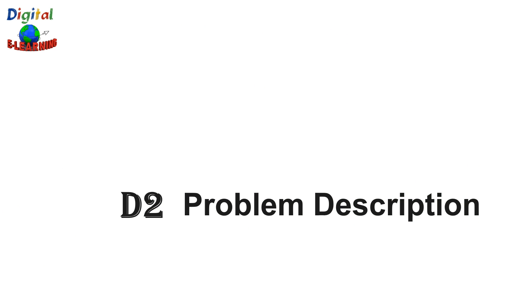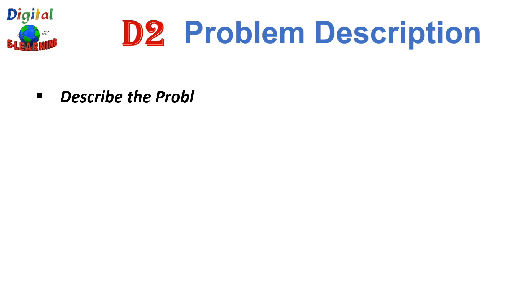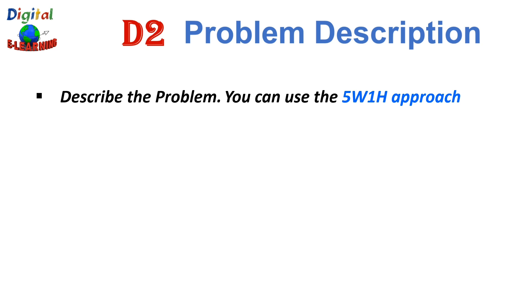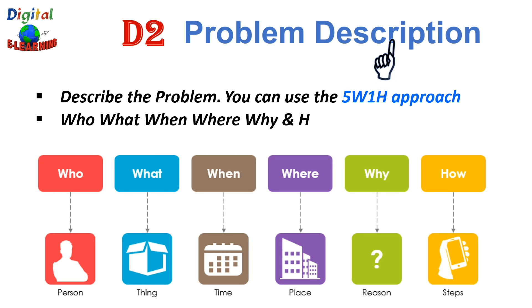The third D is D2 — Problem Description. The 8D method's initial focus is to properly describe the problem using known data and placing it into a specific category for future comparison. You can use the 5W1H approach here — Who, What, When, Where, and Why — to quantify and clarify the problem into a clear statement.